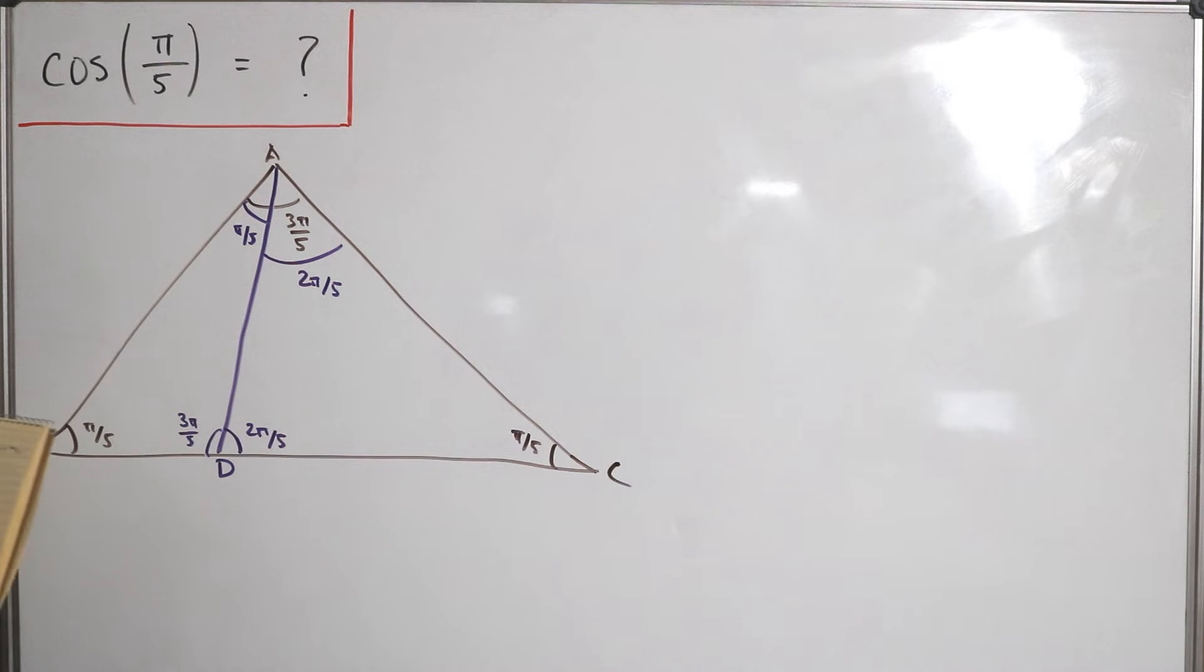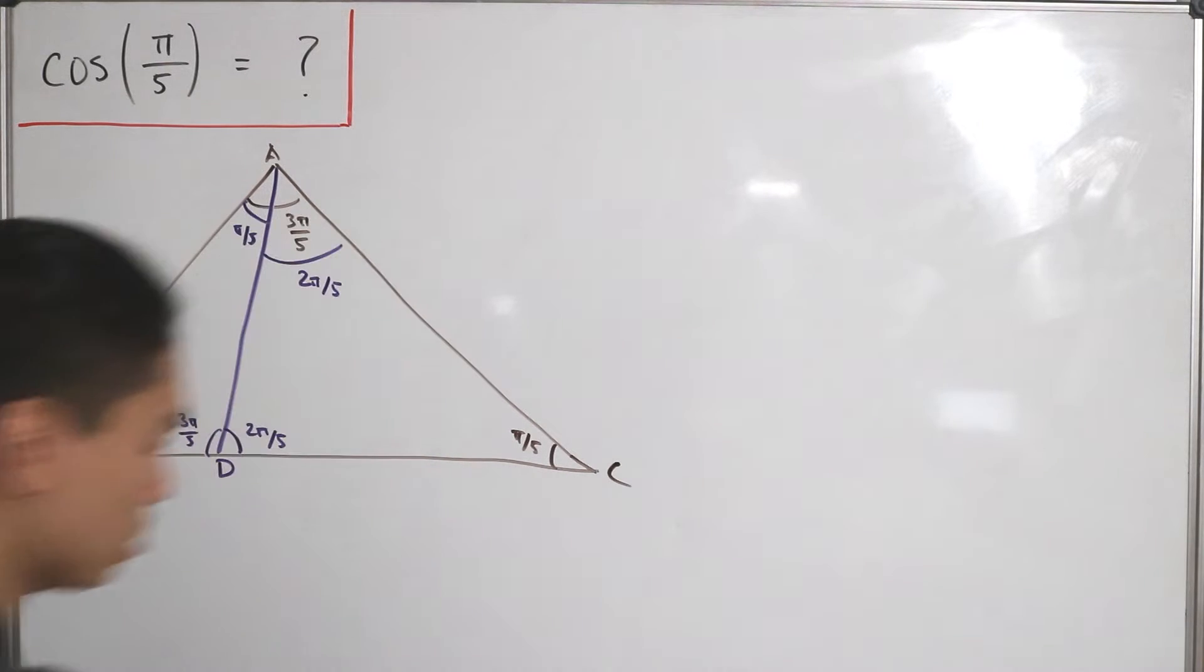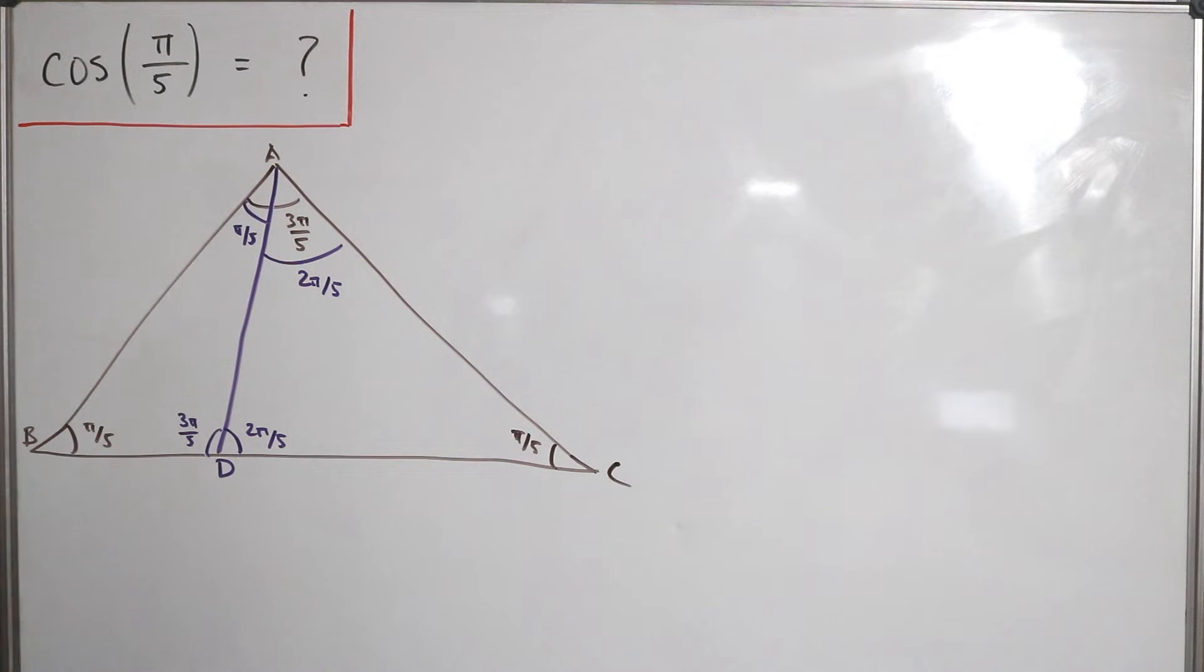Now where do we go from here? Let's give some length to the line segments. Let us suppose that we let line segment AB, AC, and DC equal to 1. So 1 over here, and then AC is going to be 1 over here—again, this is an isosceles triangle—and then DC is equal to 1 over here.